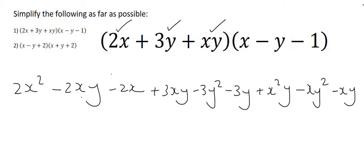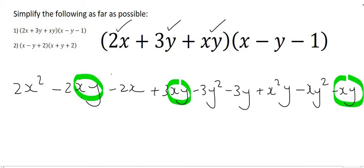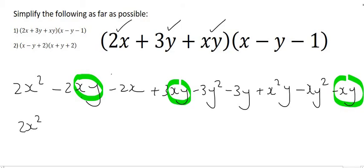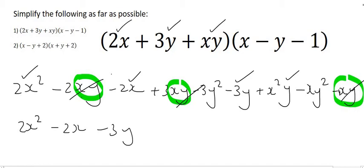Now we can look at this long expression and look for any like terms. We can see that this xy is the same as this xy as well as this xy at the end — those are the only like terms. So we're just going to write the 2x squared down. For the xys we're going to have minus 2 plus 3 minus 1, which equals 0, so the xys cancel out completely. All that we have left is the minus 2x, the minus 3y, the positive x squared y, and the negative xy squared.